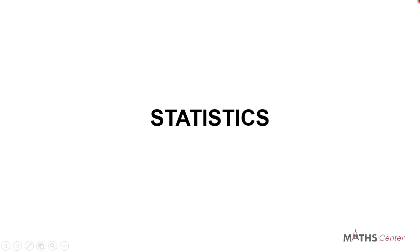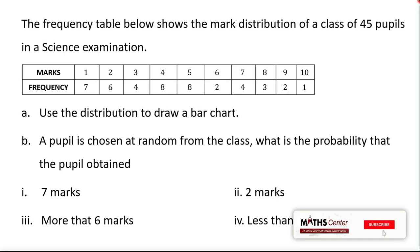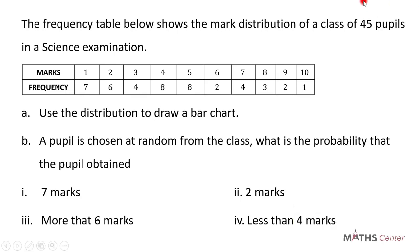Welcome back. We are still on the topic of statistics. In the previous video we solved a question on drawing a bar chart. In this video we are going to solve another question. The question we have is: the frequency table shows the marks of a class of 45 pupils in a science examination. The question asks us to use the distribution to draw a bar chart.